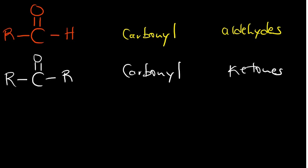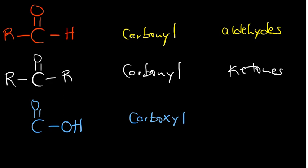If you see a carbon double bonded to oxygen plus a hydroxyl group, this changes things. It's no longer a carbonyl group alone — it's now a carboxyl group. The class of compounds with a carboxyl group is called carboxylic acids.